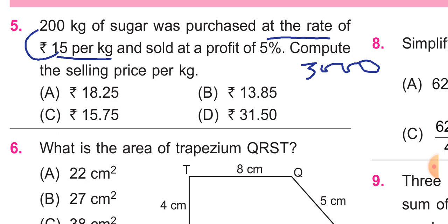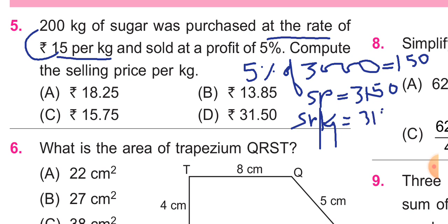Profit of 5% on 3,000 is 150. So total selling price per kilogram is 3,150 upon 200, which gives us the answer.